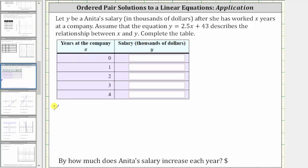For the first row, we are given x equals zero. To find the corresponding y value, we substitute zero for x into the equation, which gives us y equals 2.5 times zero plus 43, which is equal to zero plus 43, which equals 43.